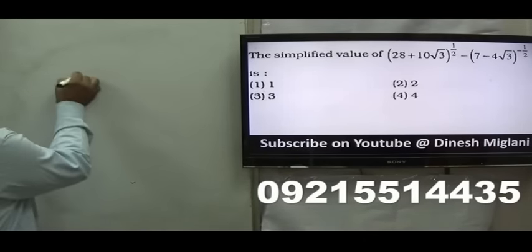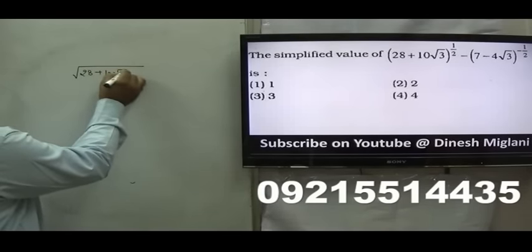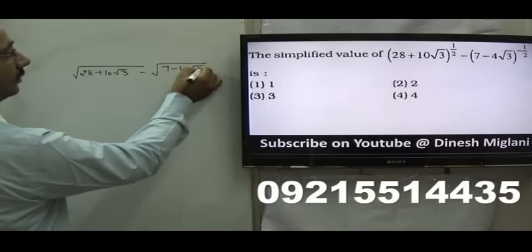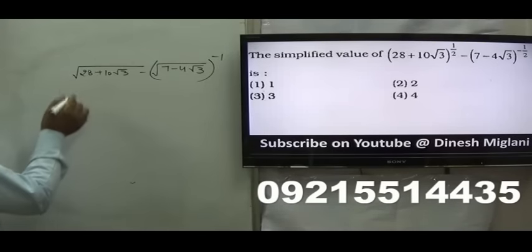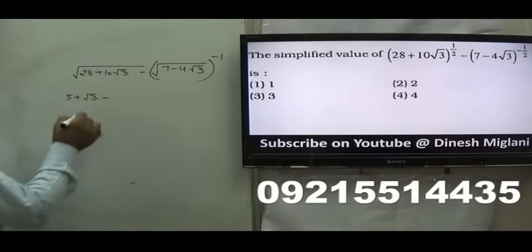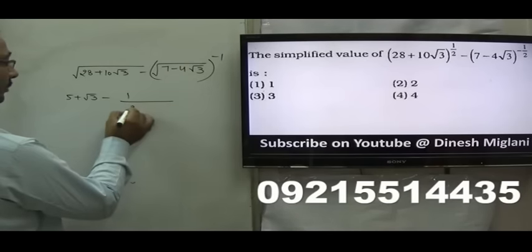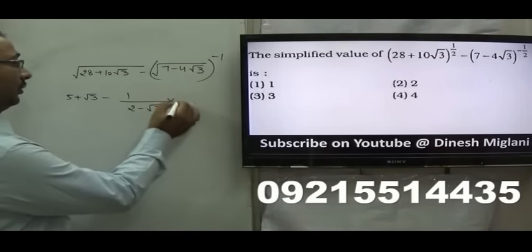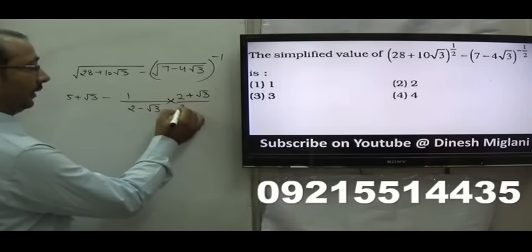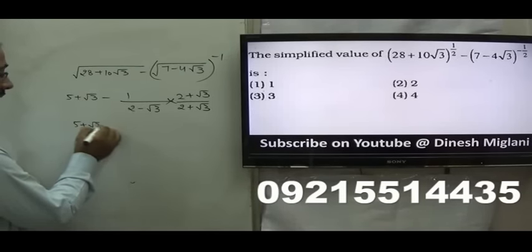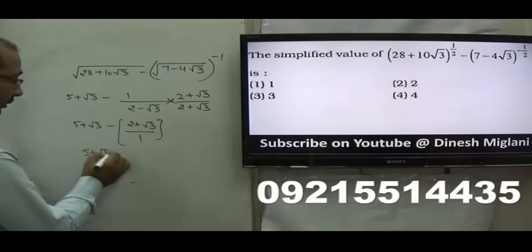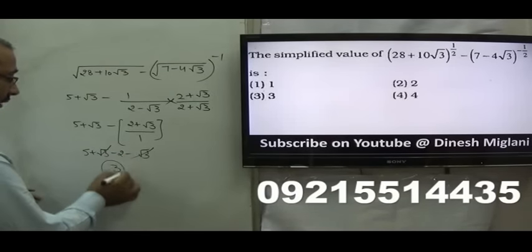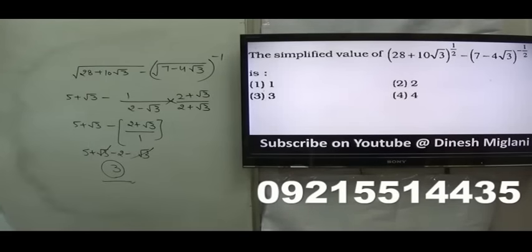Next question: we have √(28 + 10√3) minus √(7 − 4√3)^(−1). Since the power is −1, that becomes 1/√(7 − 4√3). For √(28 + 10√3): 2·5·√3 gives 5 + √3. For 1/√(7 − 4√3): this is taken as 1/(2 − √3), and rationalizing by multiplying by (2 + √3)/(2 + √3) gives (2 + √3)/(4−3) = 2 + √3. So the expression is (5 + √3) − (2 + √3) = 5 − 2 = 3. Hence the third option, 3, is my answer.